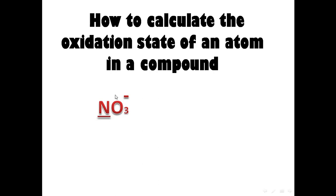The rule says the summation of oxidation states of all atoms in a compound is equal to the overall charge. So if we sum the oxidation state of nitrogen and the oxidation state of the oxygen atoms — I mean three oxygen atoms — it gives us minus one. So let's start with the rules.